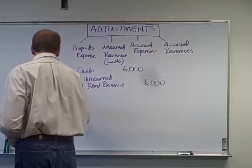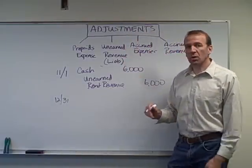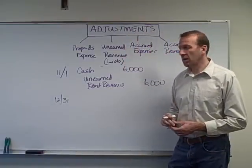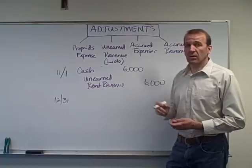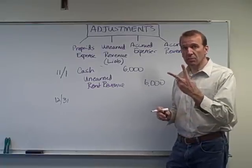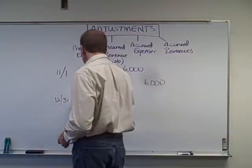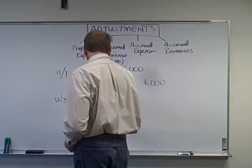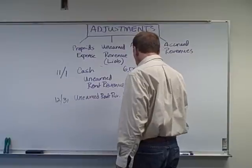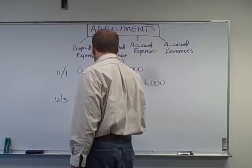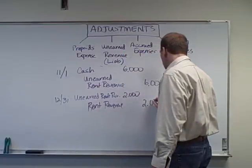So now on December 31st, they've been in this office space for two months. Remember, this $6,000 was for six months at $1,000 per month. Our unearned balance shows $6,000, but that balance isn't correct anymore because they've used up two months worth of it — we've actually earned two months of revenue. So we need to reduce the unearned rent revenue by $2,000 and recognize rent revenue of $2,000.